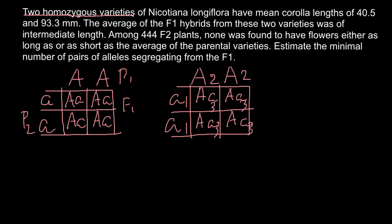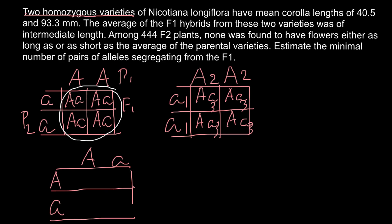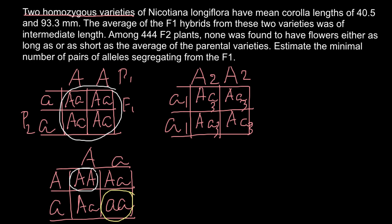All F1 generation is heterozygous. When we cross two heterozygous parents in a Punnett square, we can get: homozygous dominant (AA), two heterozygous (Aa), and homozygous recessive (aa). So from this Punnett square we get one homozygous dominant, two heterozygous, and one homozygous recessive genotype. When the trait is additive, the intermediate heterozygous genotype is different from both homozygous extremes.